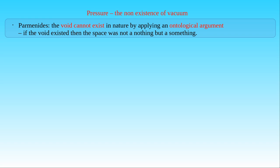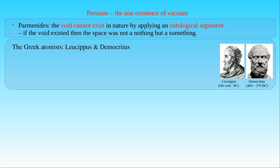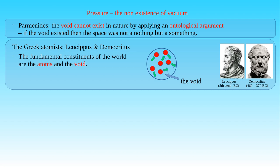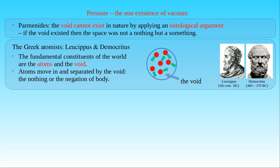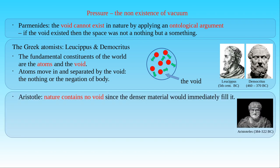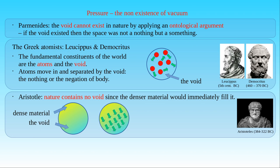However, Democritus and Leucippus, the Greek atomists, had another view. They thought that the fundamental constituents of the world are the atoms in the void. The void is the nothing or the negation of the body, and atoms move in the void and are separated by the void. Aristotle, following Parmenides, rejected the existence of the void. He rephrased the ontological argument but also provided another one based on some principles in physics. He stated that if the void appeared somewhere due to the rarefaction of matter, then the denser material would immediately fill the gap. As a result, vacuum does not exist.